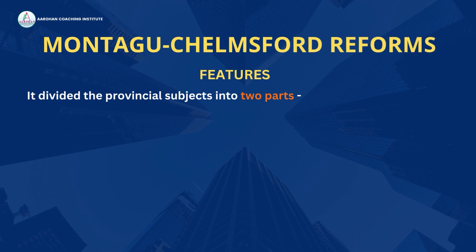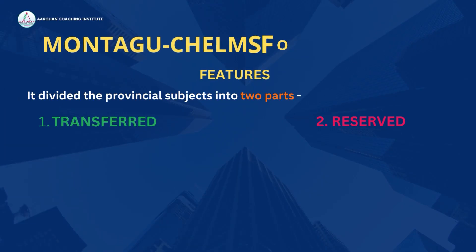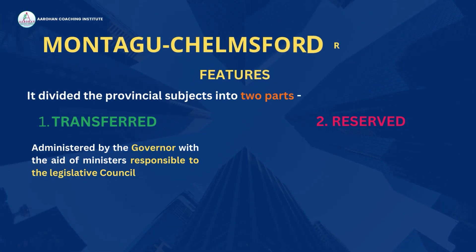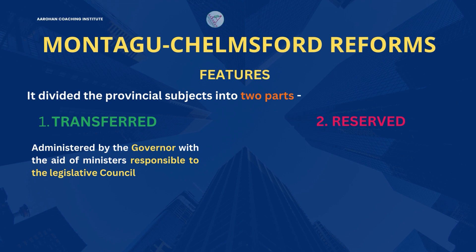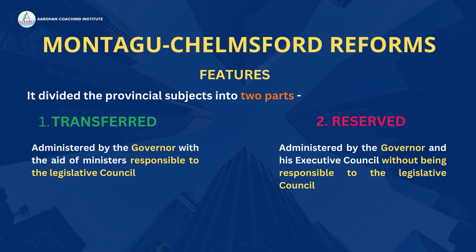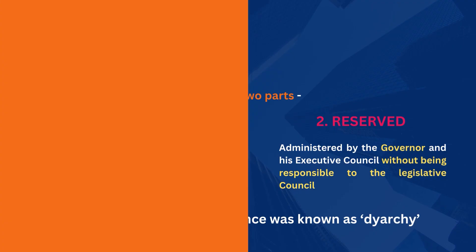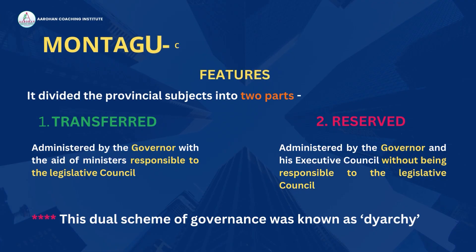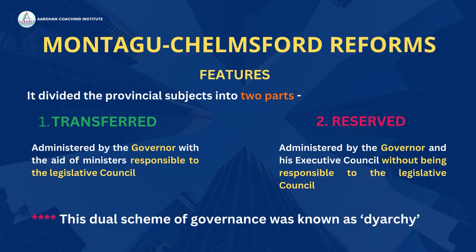It further divided the provincial subjects into two parts: transferred and reserved. The transferred subjects were to be administered by the Governor with the aid of ministers responsible to the Legislative Council. The reserved subjects, on the other hand, were to be administered by the Governor and his Executive Council without being responsible to the Legislative Council. This dual scheme of governance was known as Diarchy.